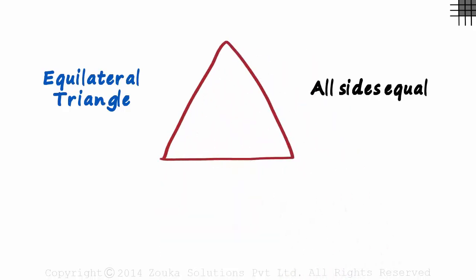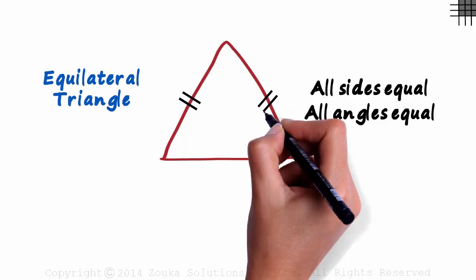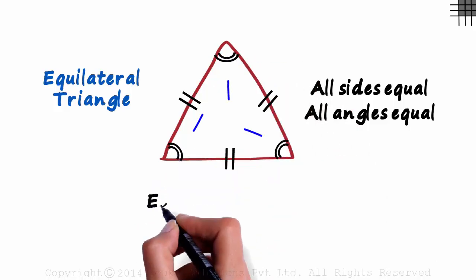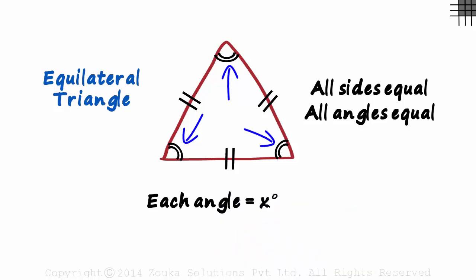All sides of the equilateral triangle are equal to each other and so are the angles. So if we assume each angle to be x degrees, then 3x would equal 180 degrees as the sum of angles of a triangle is always 180 degrees. Each angle will measure 60 degrees.